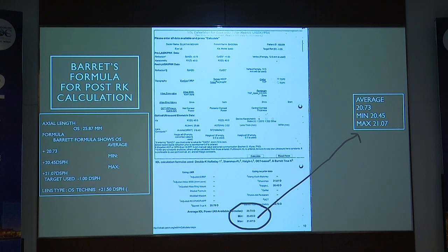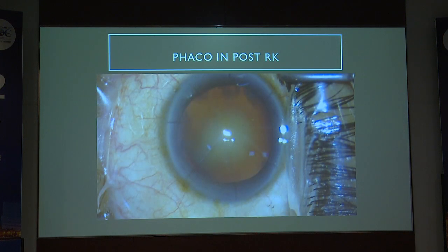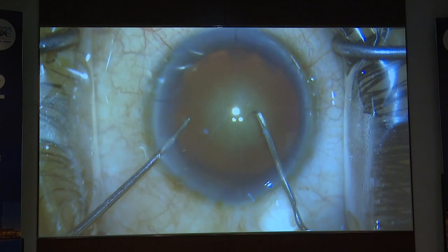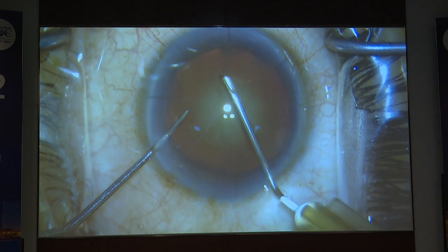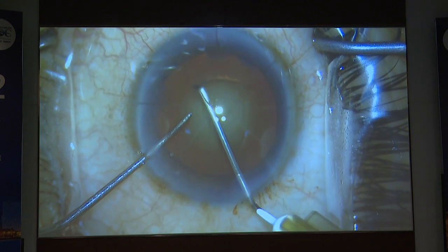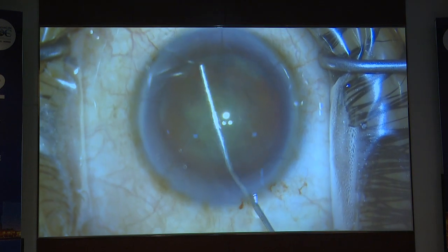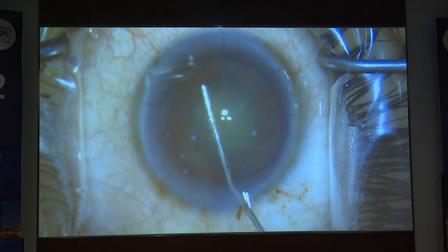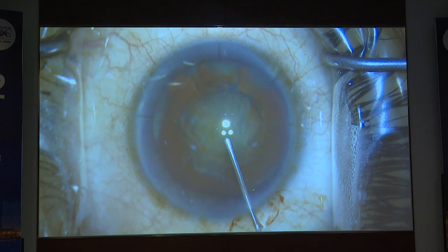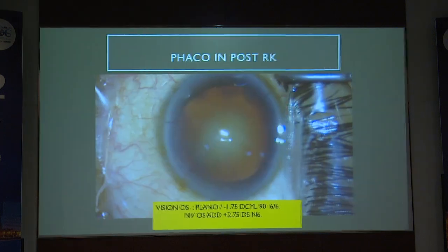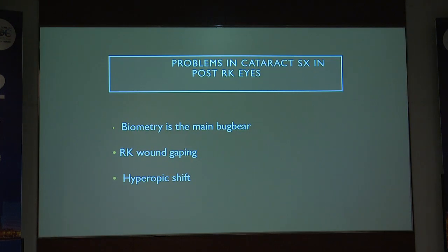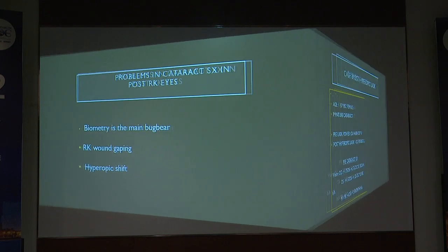For this patient we advised against a toric lens because we might be off the mark and she could have a lot of hyperopic shift — better to avoid it. The problems in post-RK cases include the incisions giving way, so do an ASOCT to find the depth of incisions and ensure your incision is placed between the two marks. Patients can present with 8 or even 16 radial keratotomies; in those cases a scleral incision is preferable. Biometry is a big bugbear and arcuate wound gaping and hyperopic shift must be kept in mind.